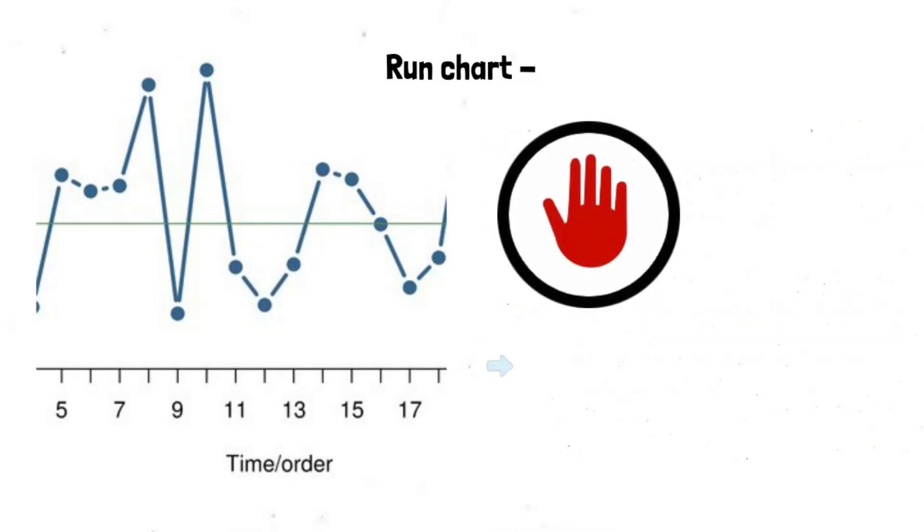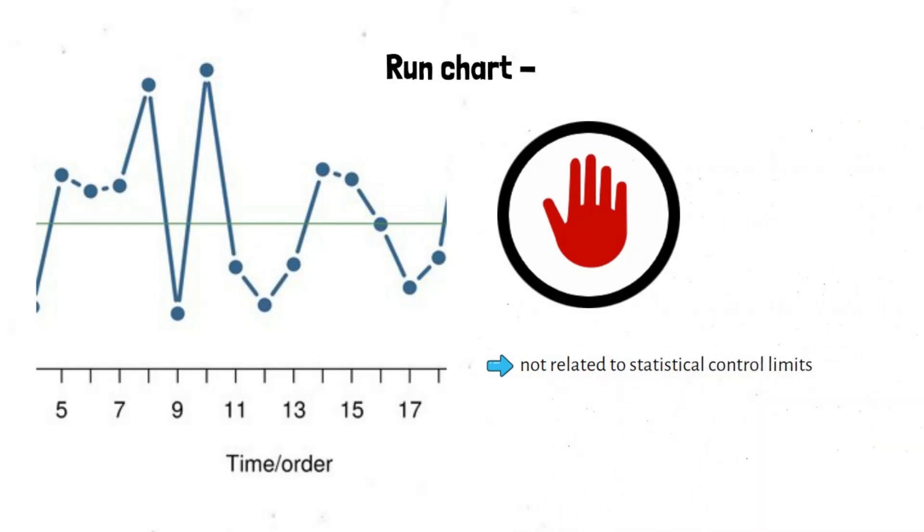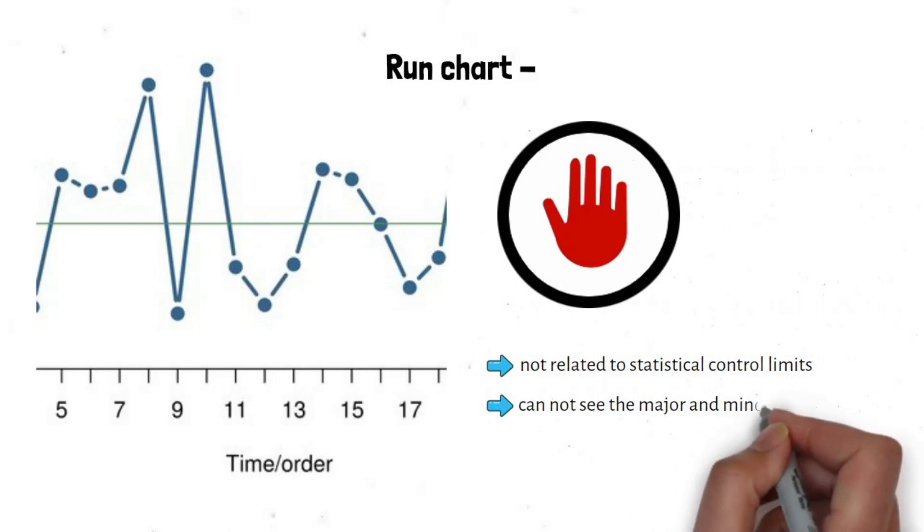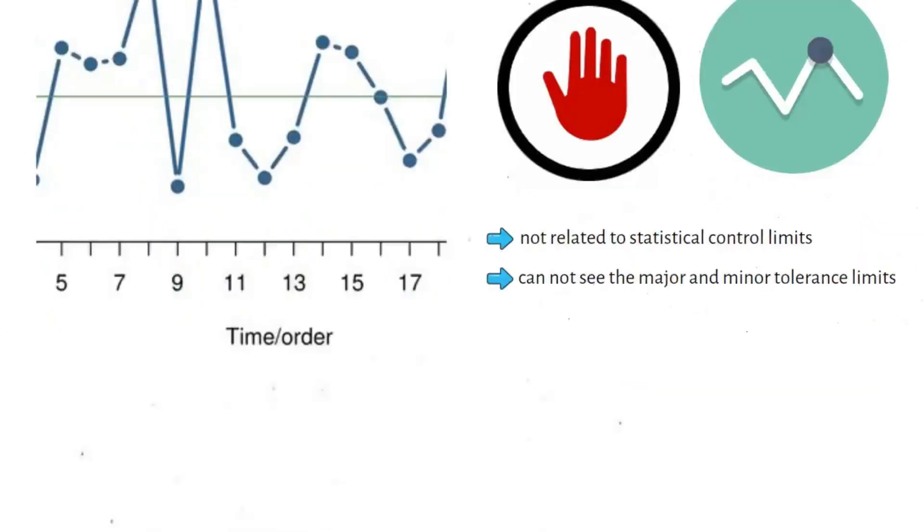Limitations of run chart: a run chart is not related to statistical control limits, therefore you cannot see the major and minor tolerance limits. It does not provide you enough information regarding the stability and trends of the process.